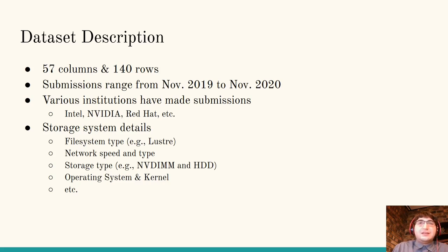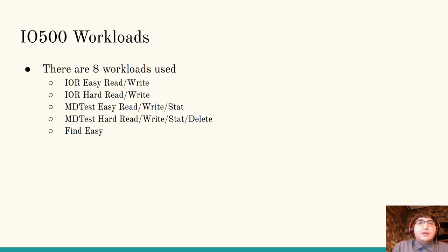The dataset contains information about the storage systems benchmarked including file system type, network speeds, storage type, operating system and kernel, etc. The IO500 runs eight different workloads using IOR and MDTest. IOR is used to stress IO bandwidth whereas MDTest is used to stress metadata throughput. Easy tests are used to show the optimal cases of performance whereas hard cases show bottlenecks.